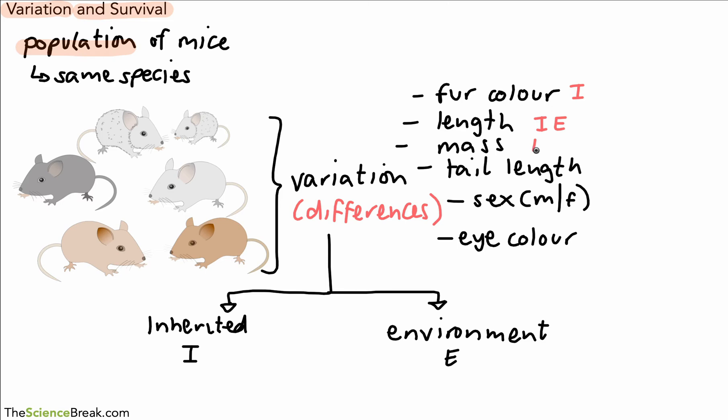The mass is very similar. It could be inherited, but not enough food or nutrients in the environment might cause it not to have as high a mass as it possibly could. So that's both inherited and environment. Tail length is probably going to be the same as well. The sex, whether it's male or female, is only going to be inherited. The environment wouldn't cause a male mouse to become a female mouse after birth. Eye color again is going to be inherited and not likely to be because of the environment.